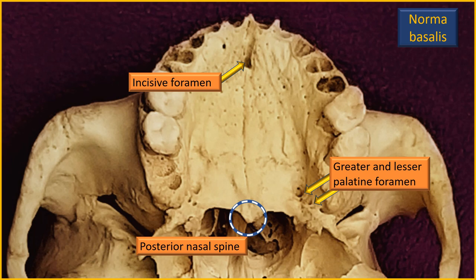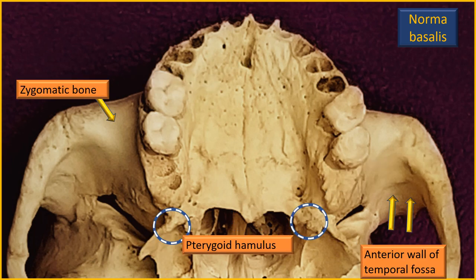Likewise, at the lateral posterior edge of the hard palate, there are two foramina: the greater and lesser palatine foramina. The greater palatine foramen is a little anterior and the lesser one is right behind it. These are also closely associated with the nasal cavity. The posterior border of the palatine bone forms a sharp border — the posterior border of the nasal cavity. The two borders meet in the midline sagittal plane and form the posterior nasal spine.